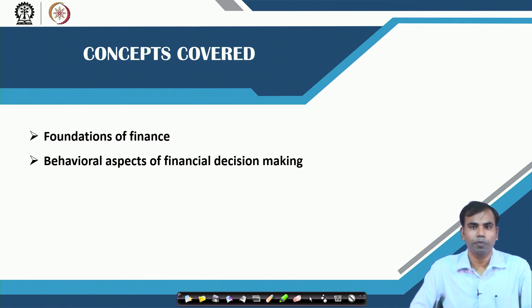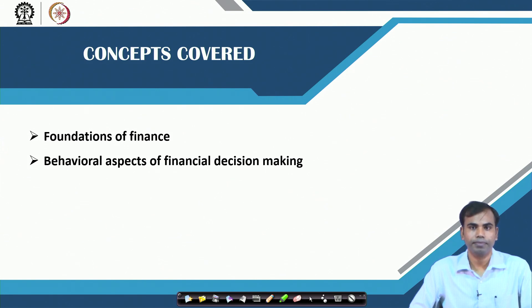For example, suppose you want to decide whether to go for an MBA. Going for an MBA requires a minimum of 2 years of time and some investment in terms of tuition fee and cost of living for these 2 years. The benefits you expect from doing an MBA would be higher career growth and increased salary in future. If the future salary in today's terms becomes greater than the investment you are making for these 2 years, then it is worthwhile to go for an MBA.